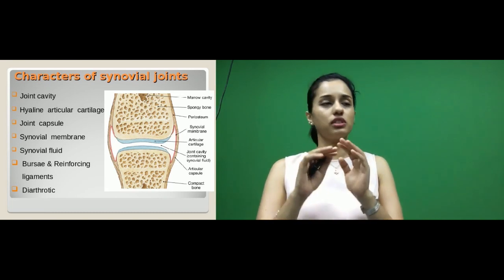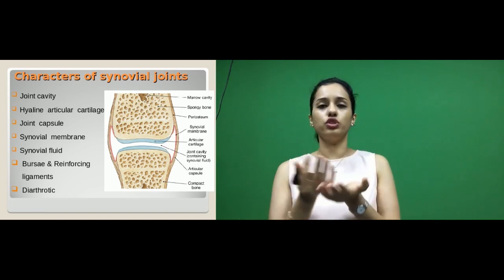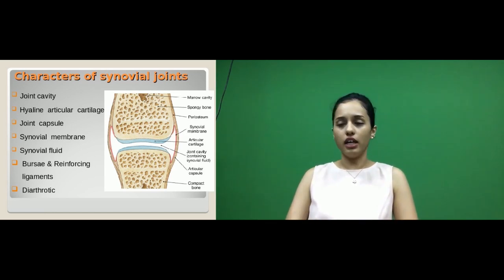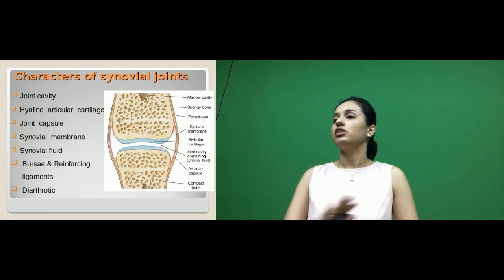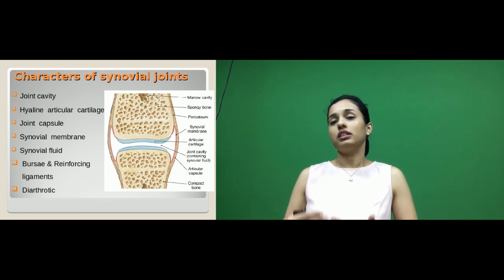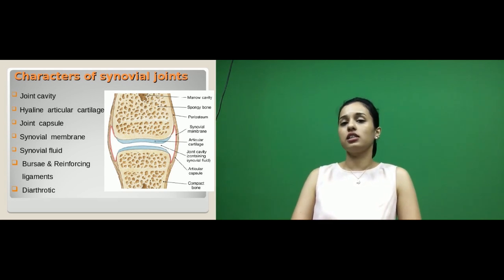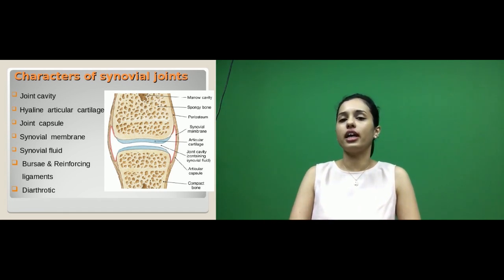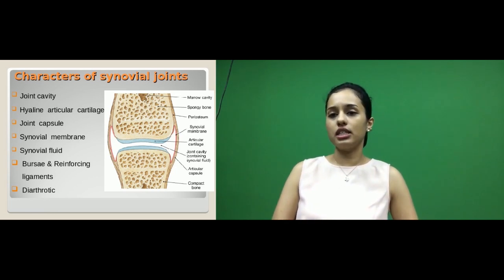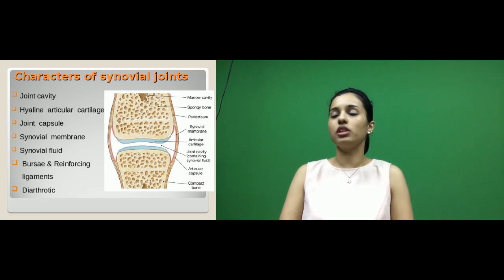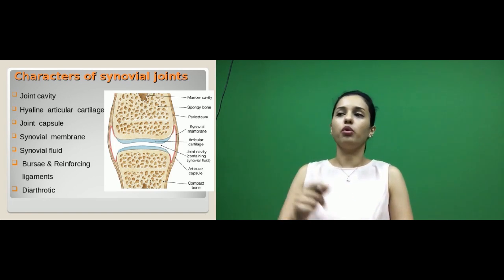Another feature is a connective tissue surrounding the whole joint called the joint capsule — an irregular fibrous tissue covering the whole joint. The joint capsule gives extra protection and is richly supplied by blood and nerves, making it sensitive to pain. In contrast, hyaline articular cartilages are avascular and have no nerve supply, so they are not sensitive to pain and depend mainly on synovial fluid for nourishment. The inner lining of the joint capsule is a membrane called the synovial membrane, which lines the joint capsule but is not present over the articular surfaces.